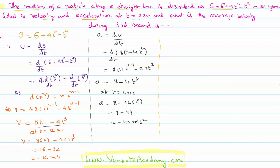We have a third part of the problem: what is the average velocity of the body during the third second? The average velocity in the third second equals the displacement traveled in the third second divided by one second, since the third second is a duration of one second itself. So I need to calculate the distance traveled in the third second.